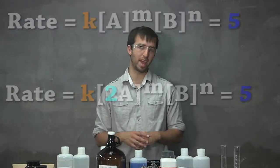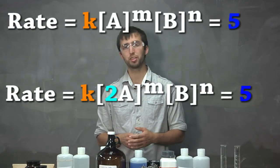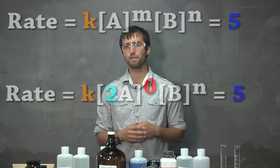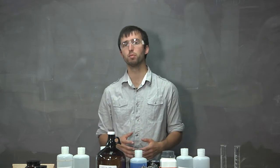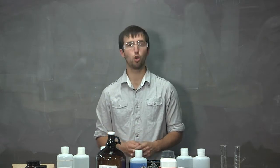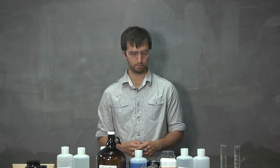If we double it and nothing happens, we know that the power is 0. If you compare various runs with changing variables, you should be able to figure out what each variable is.